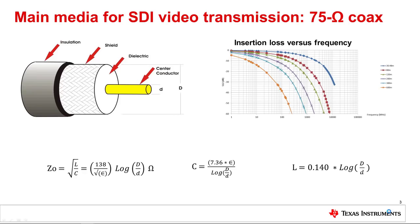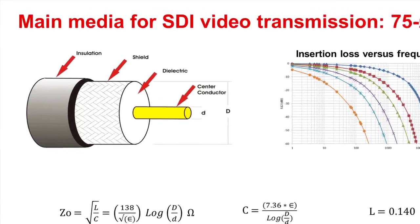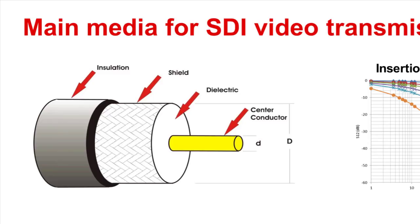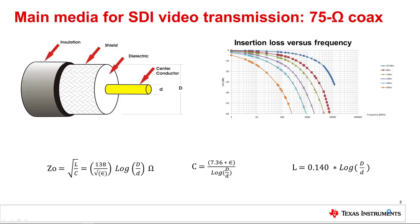The main media for SDI video transmission is 75 ohm coax. This cable has external insulation with a metal mesh shielding and polyethylene dielectric material. The dielectric constant for this material is about 2.4 but some manufacturers add air into the dielectric to make it bendable which can modify the dielectric constant to about 1.42.